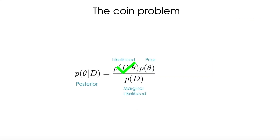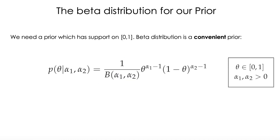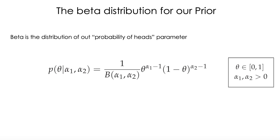Now that we have calculated the likelihood, we need to calculate the prior, and for a prior we naturally need a probability distribution. We will use the beta distribution. The beta distribution is defined by an equation that depends on two parameters and a beta function, which is just a normalization constant. I want you to think of the beta distribution as the distribution of our probability of heads — theta is the probability of getting heads, so the beta distribution tells us the most likely location of that parameter.